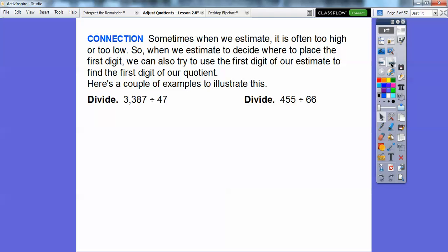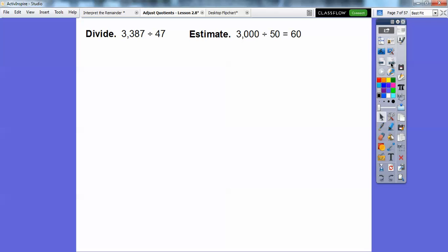3,387 divided by 47. We always estimate. 47 rounds to 50, and a nice number that goes with 5 is 30. So 3,000 divided by 50 is 60. Remember, multiplication is the opposite of division. If we did 50 times 60, 5 times 6 is 30, then carry these two zeros gives us 3,000. So we know it's 60. Let's try 6 tens because 60 equals 6 tens.